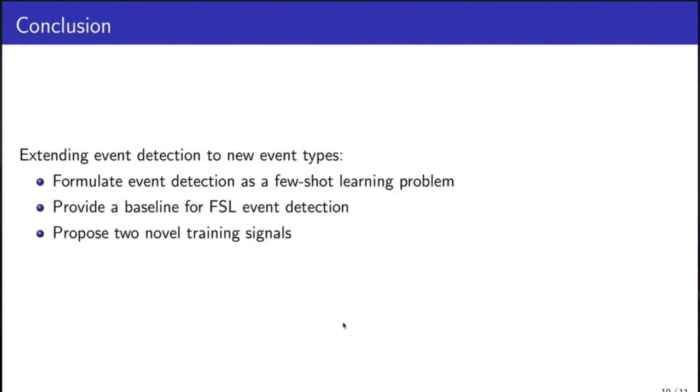To summarize, in this study we investigate event detection under few-shot learning setting. We formulate the event detection problem as a few-shot learning problem. We provide baselines for future study in event detection. We propose two training signals that have improved few-shot learning event detection.